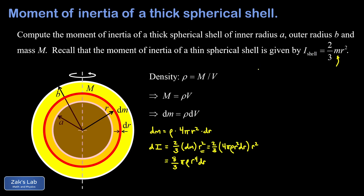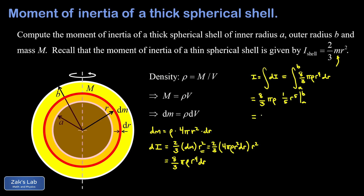Now we add all these up as r goes from a to b. The total moment of inertia is the integral — a summation device for adding up all these continuously changing infinitesimal contributions. Substituting dI = eight-thirds pi rho r to the fourth dr and integrating from inner radius a to outer radius b, the constants eight-thirds pi rho come out front. Integrating r to the fourth gives one-fifth r to the fifth, evaluated from a to b, yielding eight-fifteenths pi rho times the quantity b to the fifth minus a to the fifth.